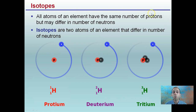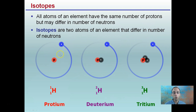Keep in mind the number of protons will define the element. Our three examples here are all hydrogen — they're hydrogen because they each have one proton and one electron. Here we're only looking at the change in the number of neutrons. No neutrons: protium. One neutron: deuterium. Two neutrons: tritium. These are all examples of isotopes of the element hydrogen.